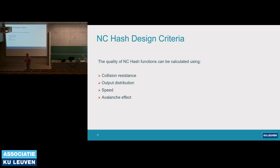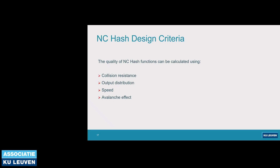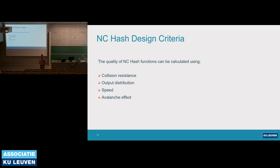Talking about hash function design criteria: broadly, hash function performance is evaluated in terms of collision resistance, distribution of output (how random they are), how fast they are, or avalanche effect — how many bits in the output change for a single bit change in the input. In our research, we use avalanche effect as a fitness function because, as per the research, it does not depend on the dataset. It depends on how good your mixing function is.